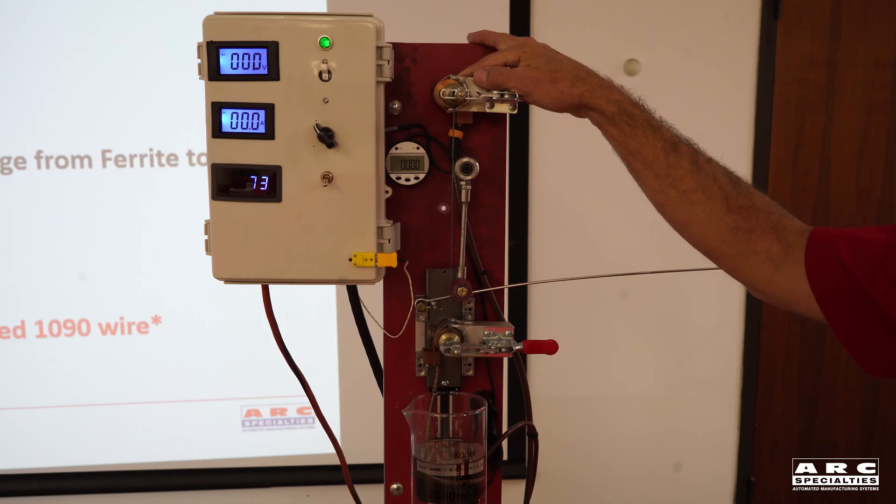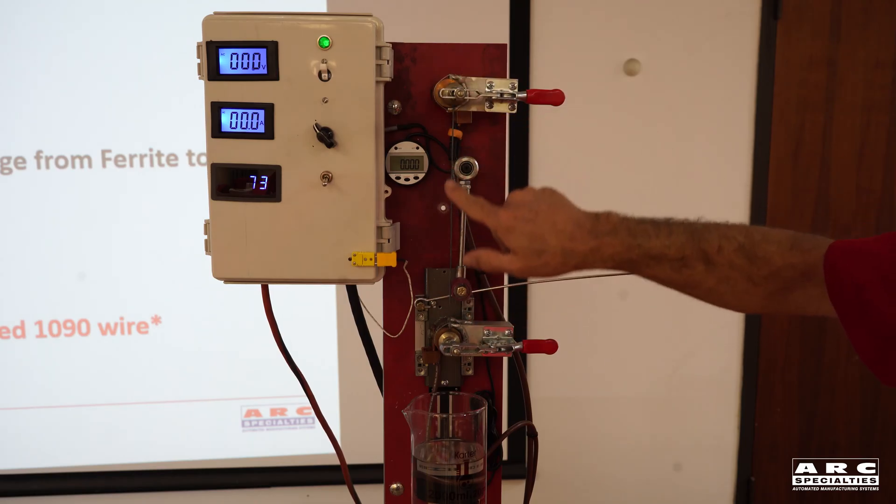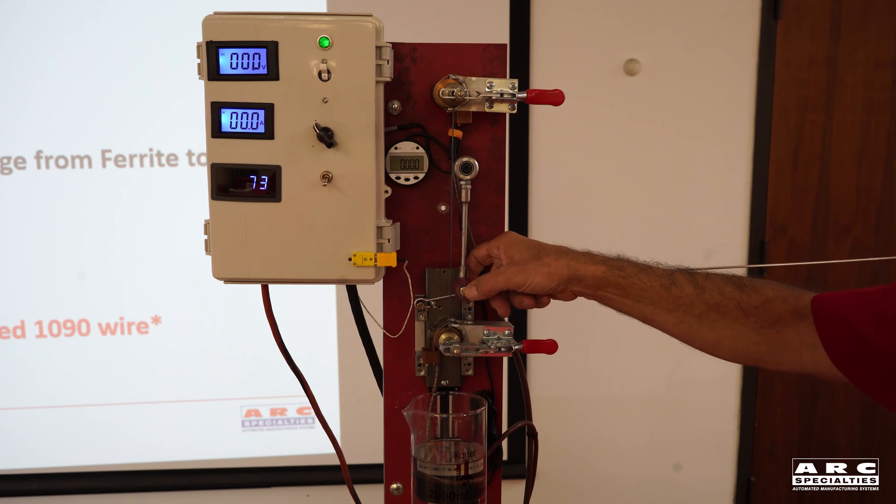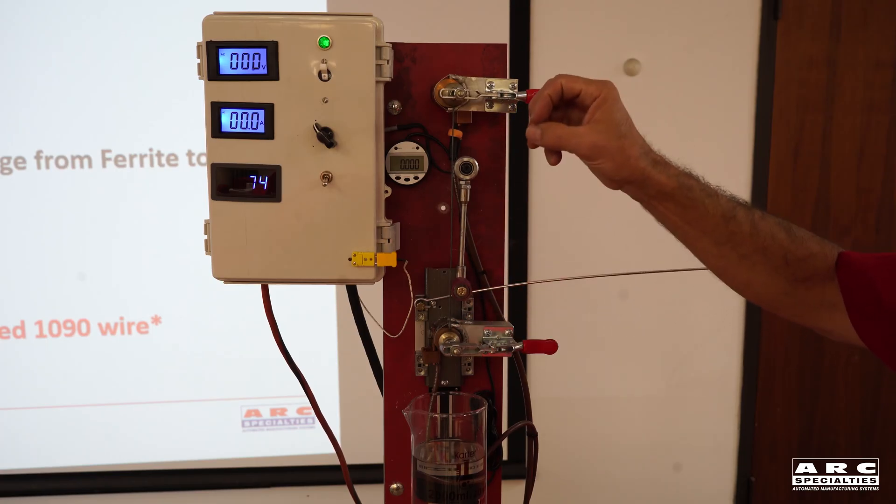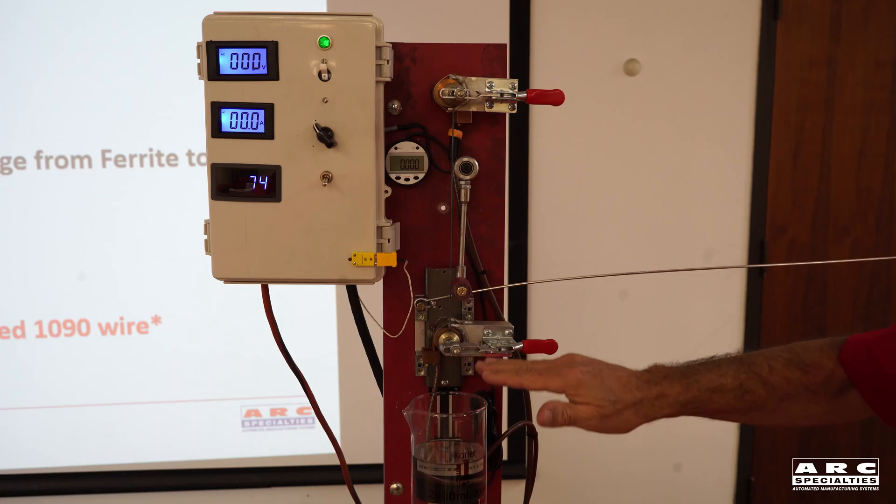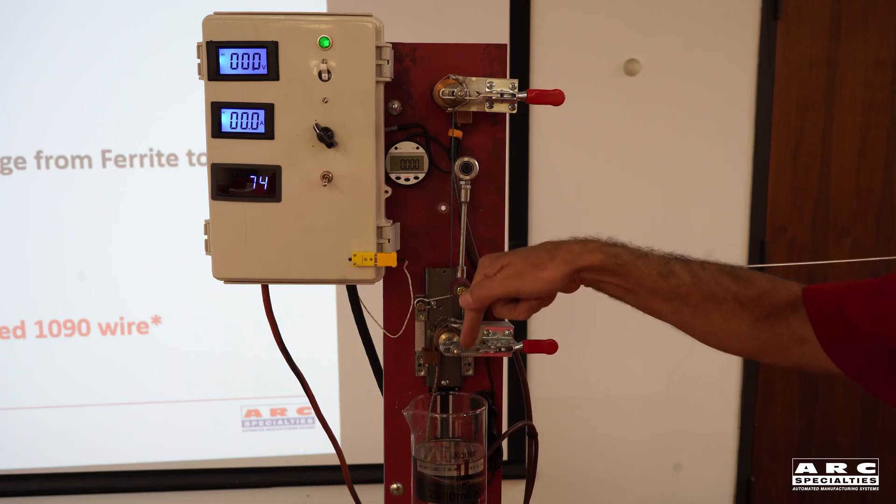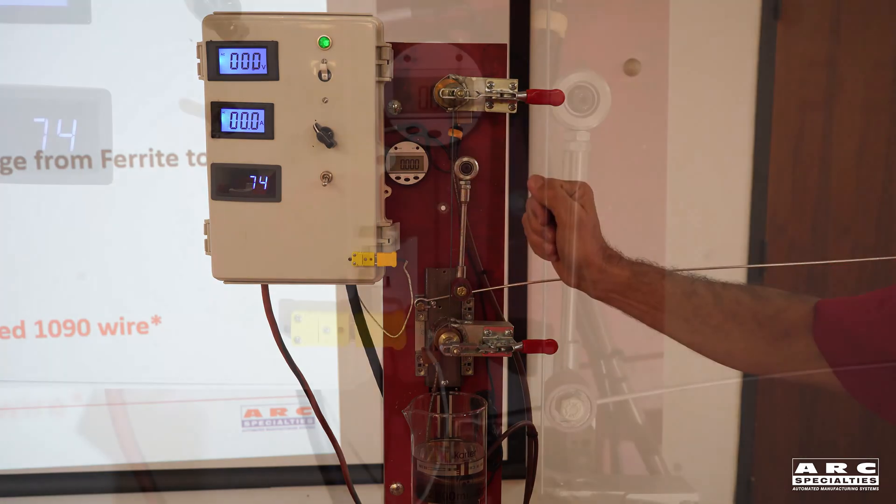This is my portable heat treating demonstration machine. What it is is a phase angle firing circuit controlling a transformer. We're going to resistance heat this wire. This is the 1090 piano wire we mentioned earlier. This magnet right here is on a pendulum. So we can see that right now the wire is magnetic. What we're going to do is turn this thing on, heat the wire. You're going to see it expand, and as it expands, this slide will move down. We're heating the part. When we want to cool it, we're going to use water. We simply release this wire into the water. So we heat it slowly, cool it quickly.